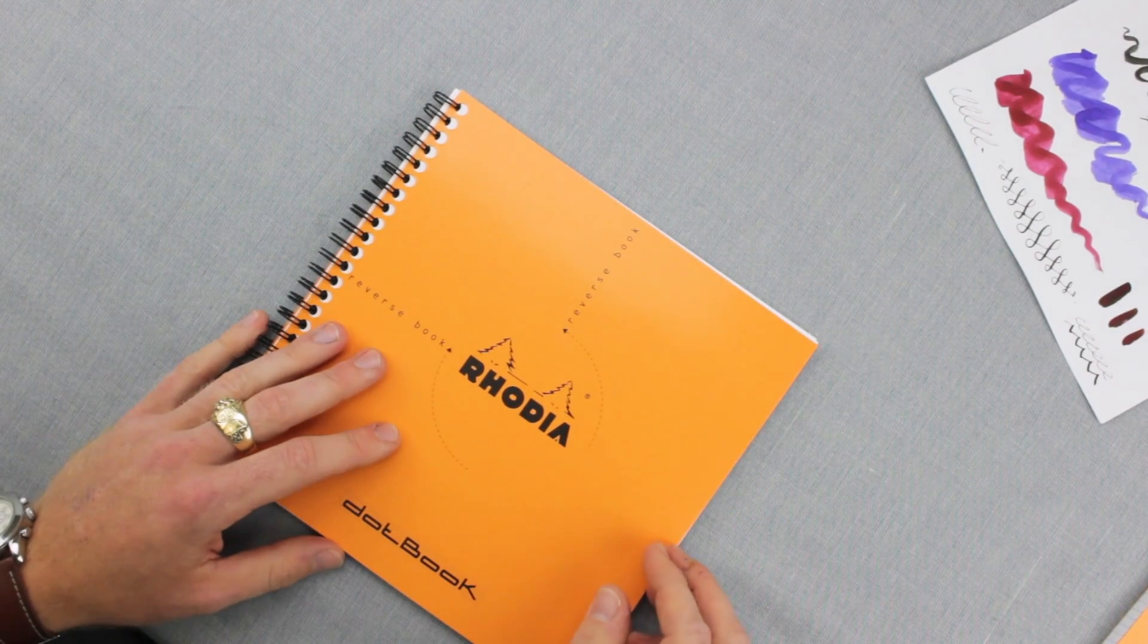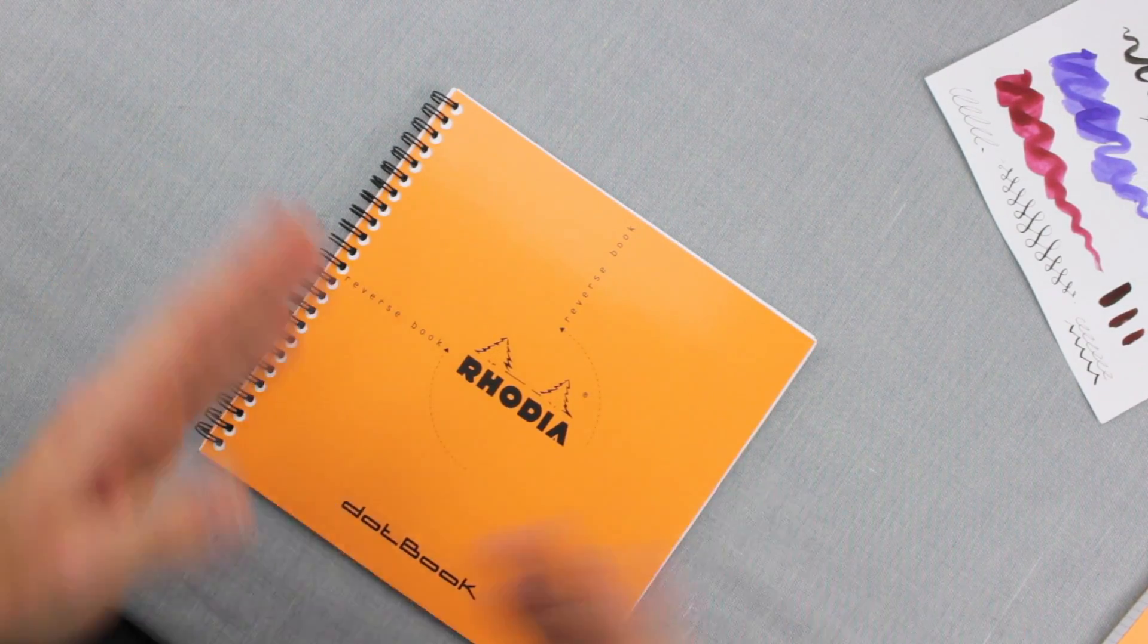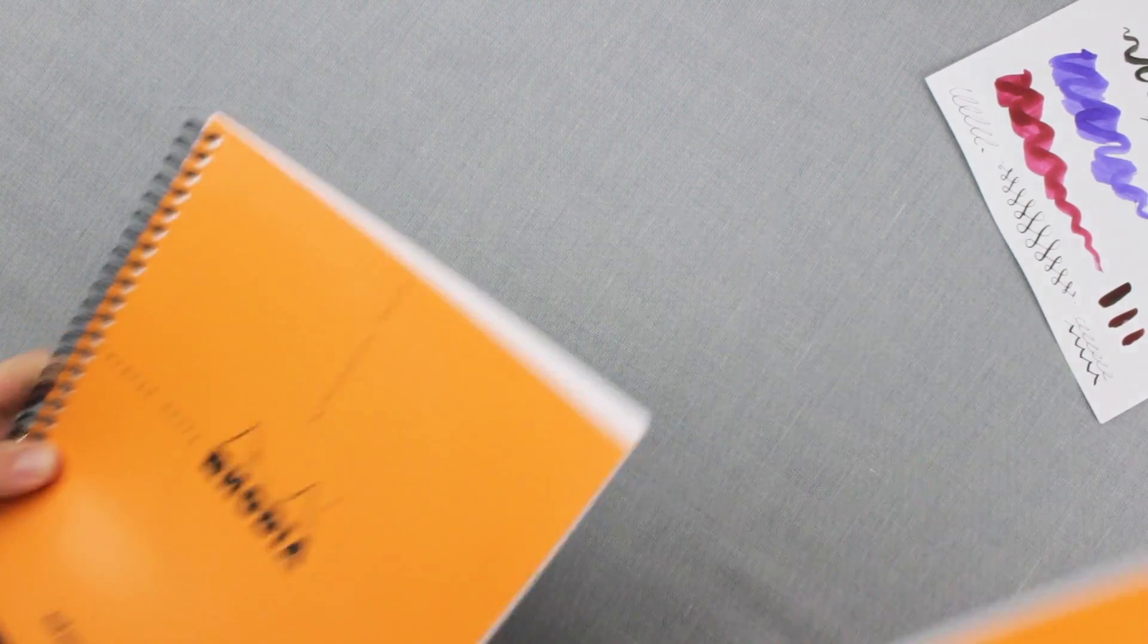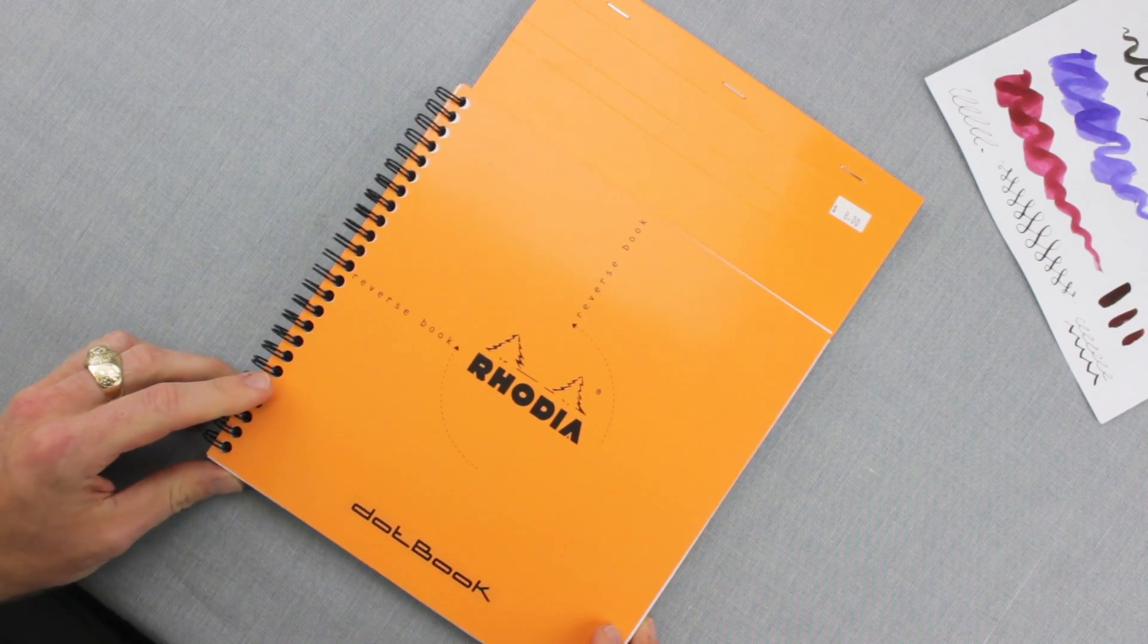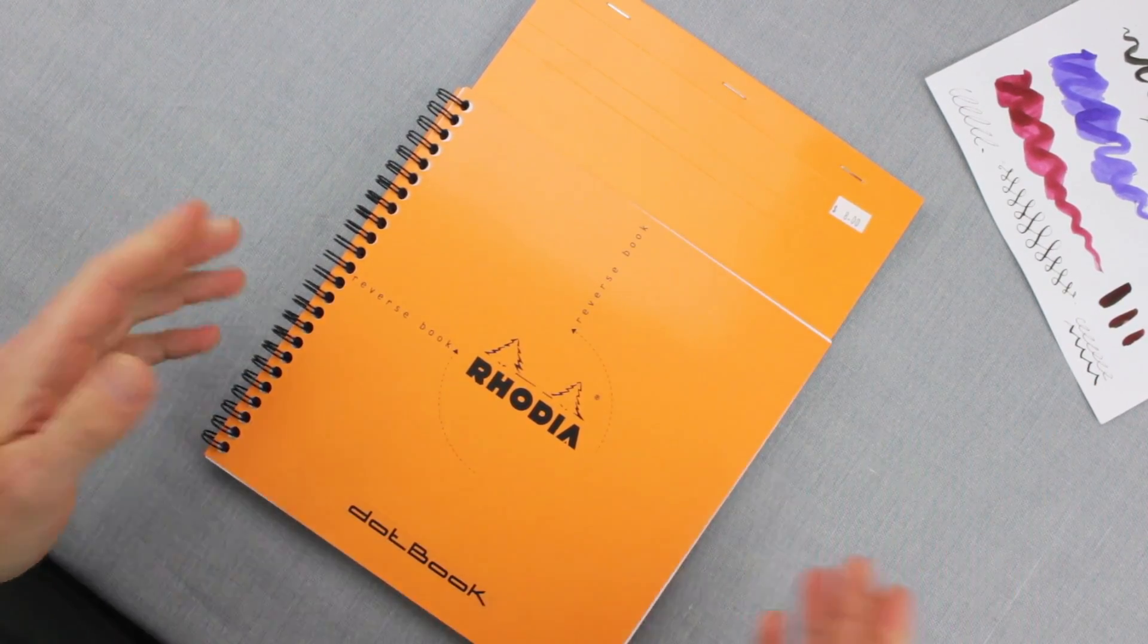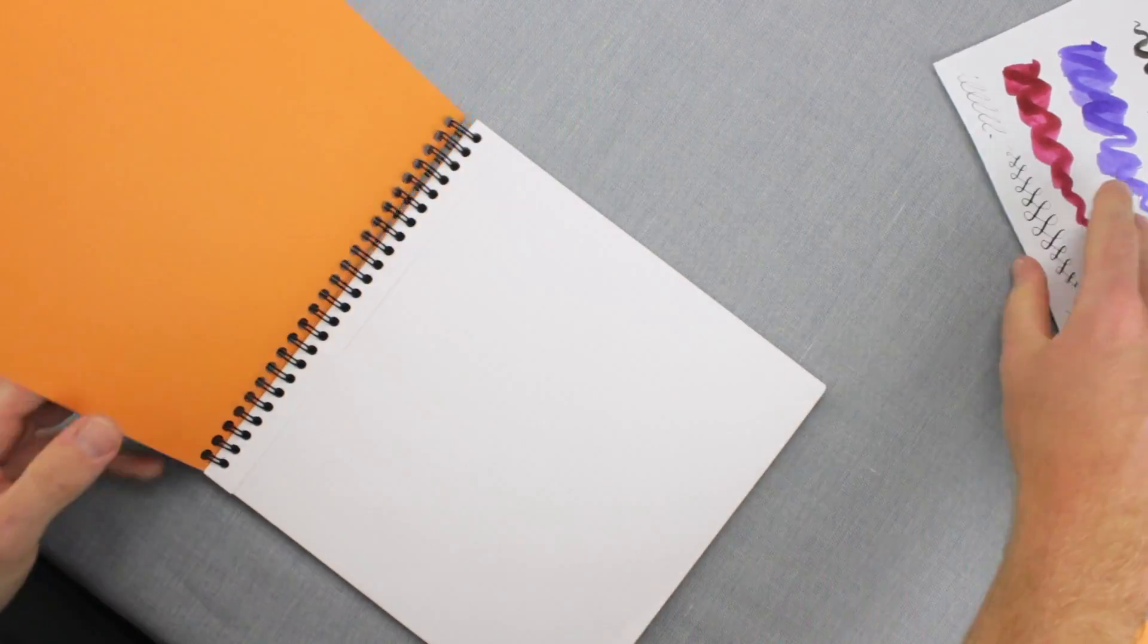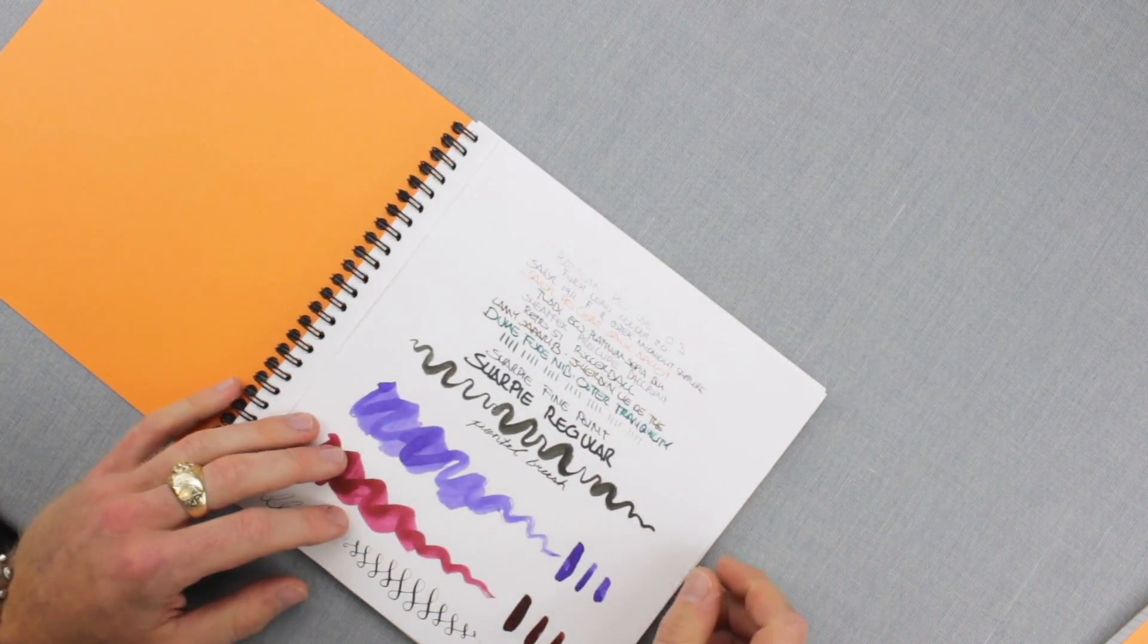The interior pages are the same, and if you're wanting to get an idea for size, if you're a fan of the standard number 18 Rhodia pads, this is exactly the same width as those. It's just squared up, so that's a nice amount of space for you to do your writing in. Plenty of room for your hand. A neat product from Rhodia—you can check them out at andersonpens.com.